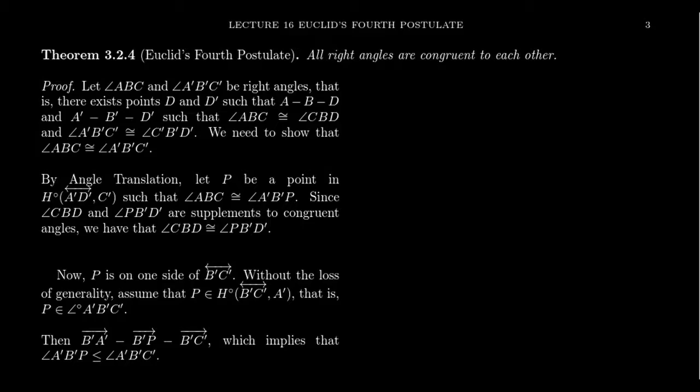We defined right angles as those angles which are congruent to their own supplement. Now we're in a position where we can actually prove that all right angles are congruent to each other. We've already proven that if an angle is congruent to a right angle then it must also be right — this gives you the other side of the coin, that all right angles are congruent to each other.